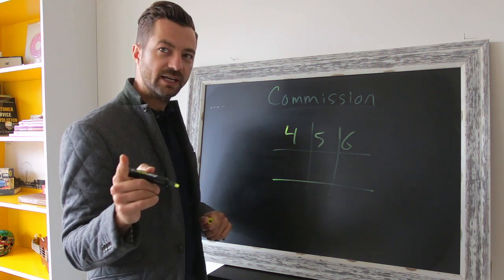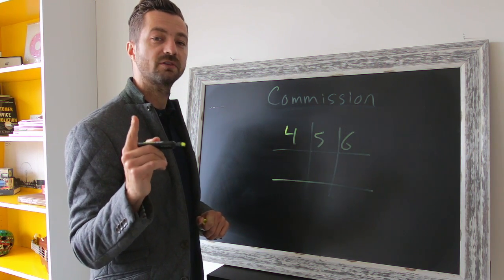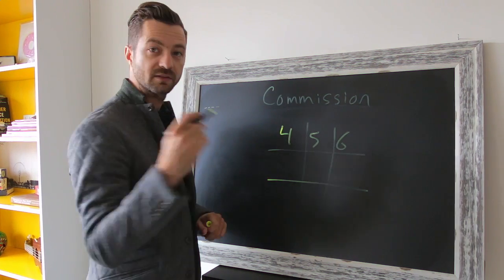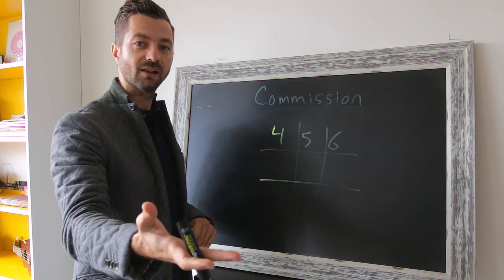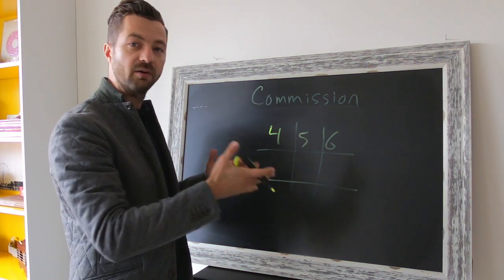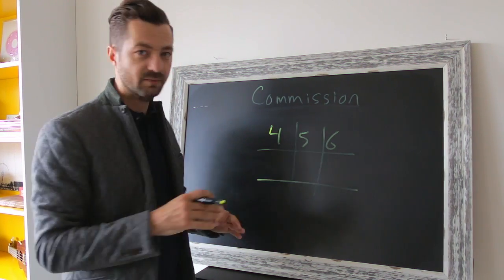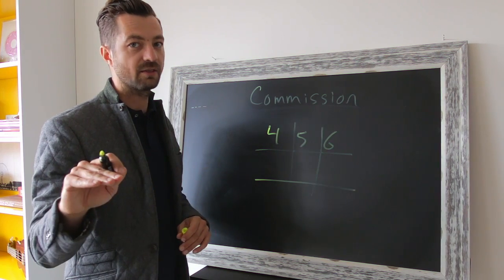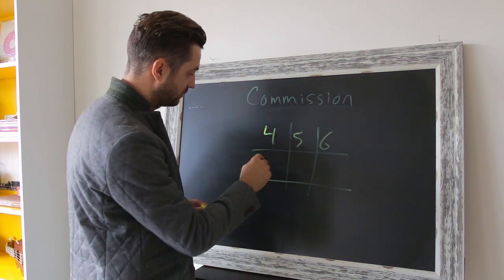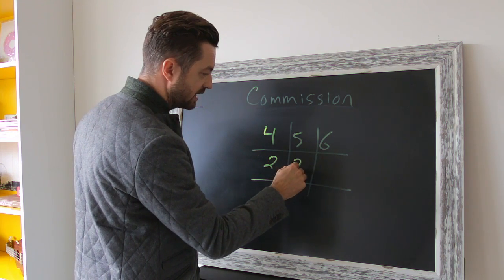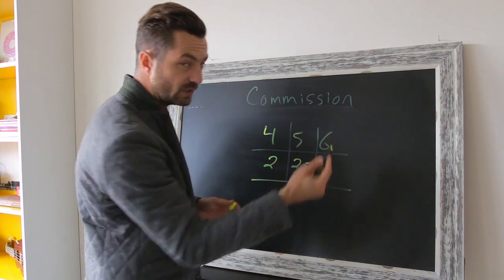But what there is something important to know is a commission split. Now, a commission will be split with an outside agent so when they sell a home to their buyer, they are making this amount of money. Now, I split all of my commissions down the middle. 50-50, fair for everybody. So, if you were to pick 4%, obviously it would be 2. 5, 2.5, 6, 3 obviously.